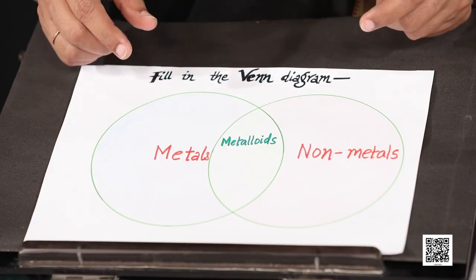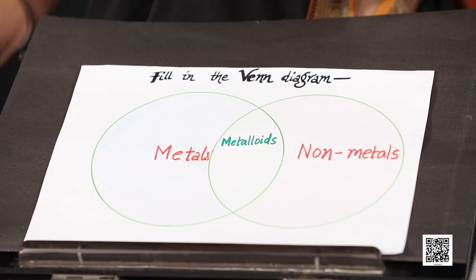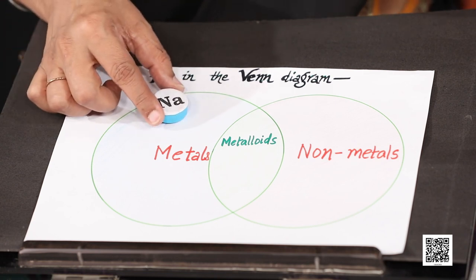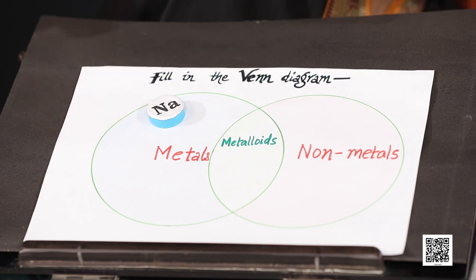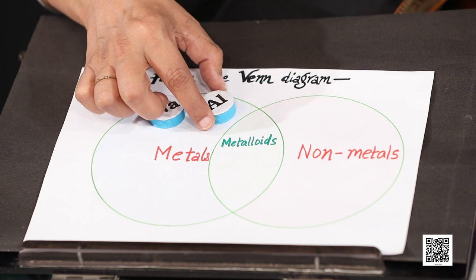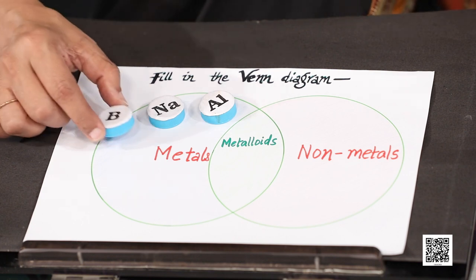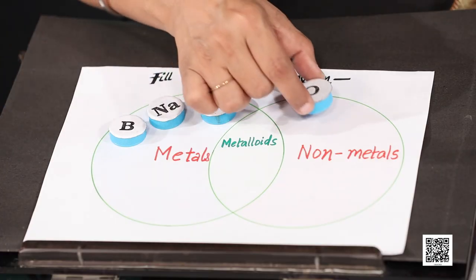Let us recognise the symbol of sodium. Na is sodium — so let's place it in the metals circle. Next, aluminium — Al — it's again a metal. Place it here. Boron is a metal too, so we place it here. Carbon — what is carbon? Carbon is a non-metal, so it goes in the non-metals circle.